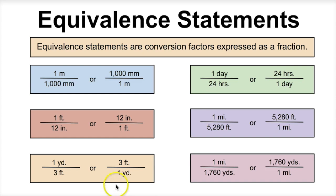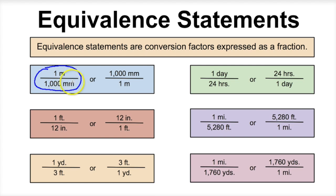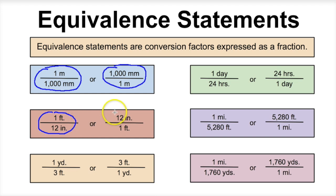When we're using dimensional analysis, we're going to have to use several different types of equivalent statements. An equivalent statement is basically a conversion factor expressed as a fraction. For example, one meter over 1,000 millimeters — this means that one meter is the same thing as 1,000 millimeters. We can also flip this: 1,000 millimeters is the same thing as one meter. Both are acceptable equivalent statements. Similarly, 1 foot is 12 inches, or flipped: 12 inches equals 1 foot.